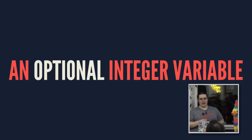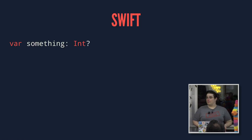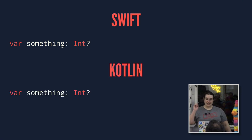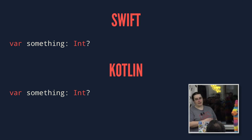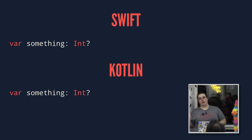How about declaring something that may or may not be there, but if it is, it will be an integer? Pretty familiar Swift syntax. And this time, even better — the Kotlin equivalent of this is exactly identical. Like Swift, Kotlin brings native support for optionality to a major platform for creating mobile applications.